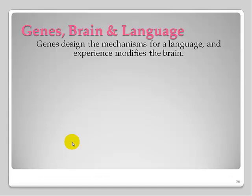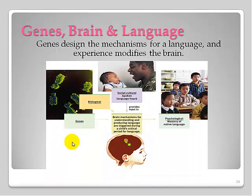If we look at genes and the whole picture through the biopsychosocial model, our genes lay down the structure of our brain mechanisms that understand and produce language and trigger those language devices during critical periods. But our social and cultural language provides input to those language devices and fine-tunes them. Nature deals the cards, but nurture plays the hand — our cultural language has an impact on that wiring. And psychologically, our mastery of our native language and other languages plays a big role as well.